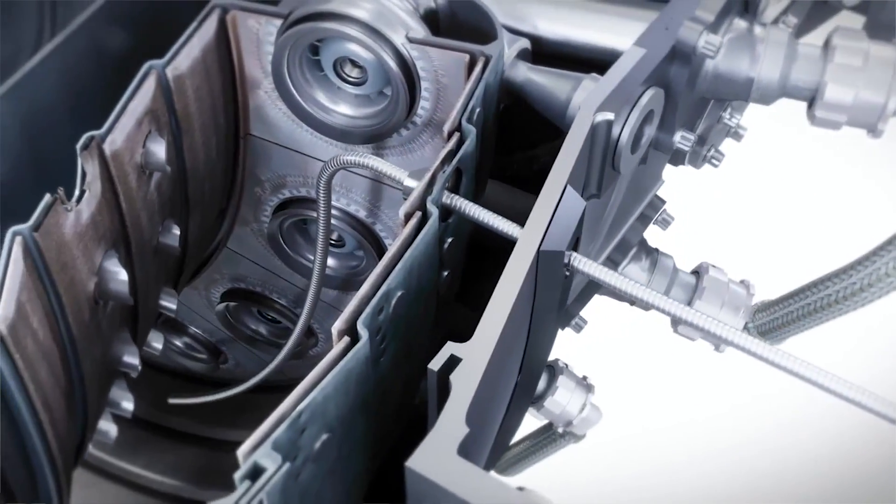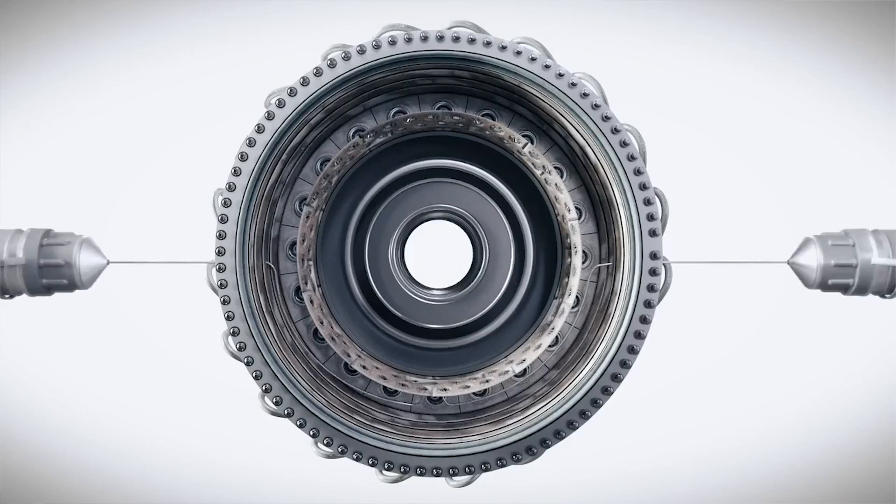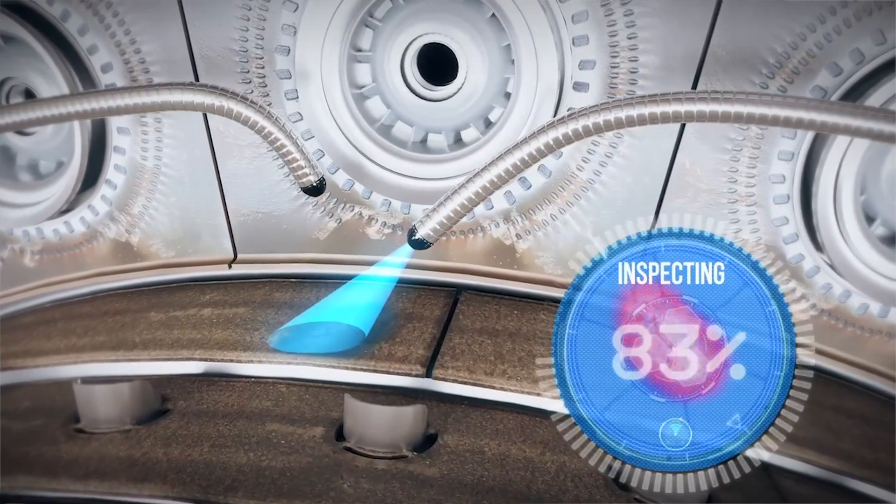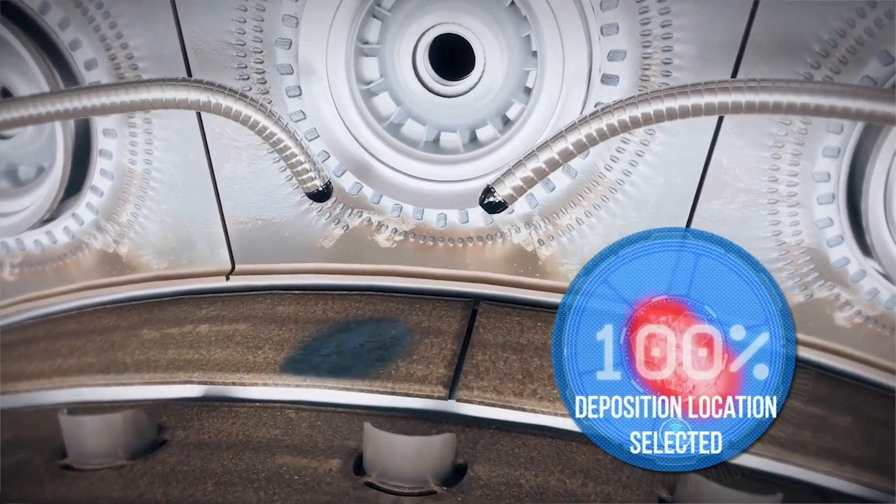So the snake is a bit like a boroscope, it goes in through a port in the side of the engine but the clever thing about this is it's able to wiggle its way through right to the very centre of the engine and it can take things with it.